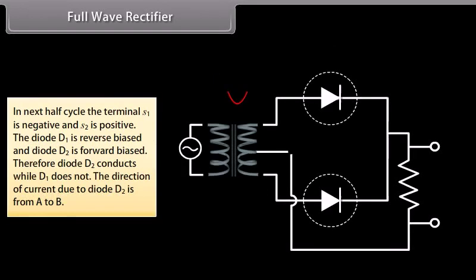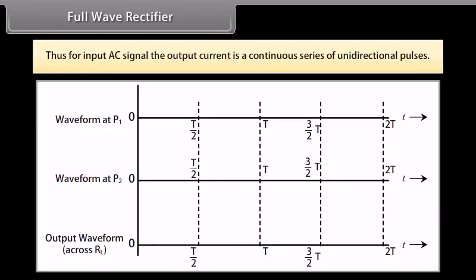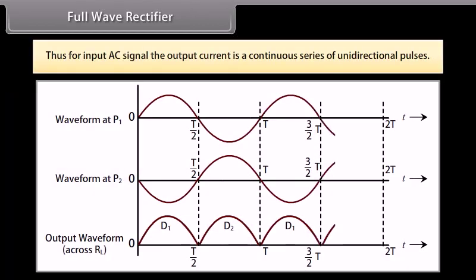In the next half cycle, terminal S1 is negative and S2 is positive. Diode D1 is reverse biased and diode D2 is forward biased. Therefore, diode D2 conducts while D1 does not. The direction of current due to diode D2 is from A to B. Thus, for the input AC signal, the output current is a continuous series of unidirectional pulses.